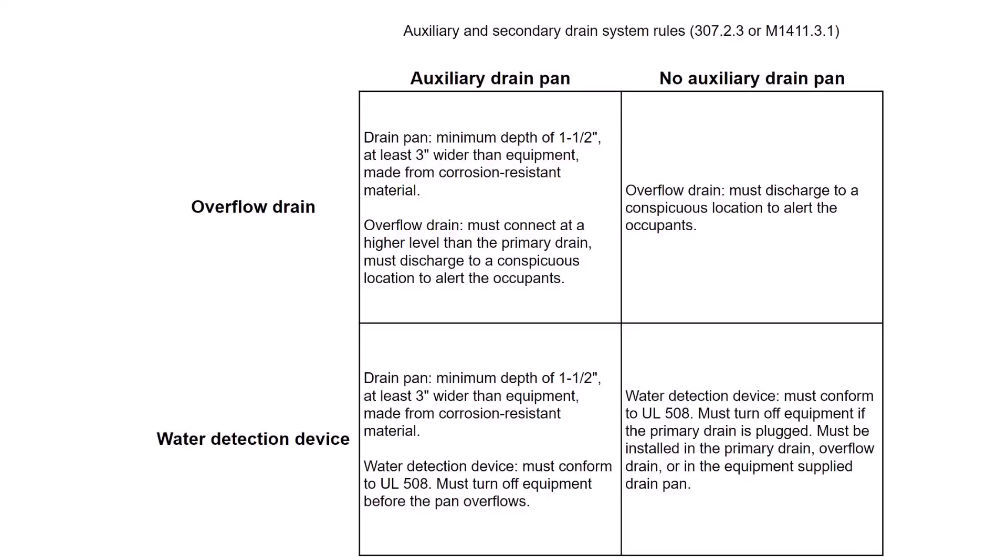So there are four ways to do this. I made up a little chart, and you break it down. It's either you have an auxiliary drain pan, or you don't have a drain pan, or you can have an emergency overflow drain, or you can have a shutoff device. You can have any combination of those four components and it's going to satisfy code requirements to protect your structure.